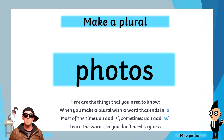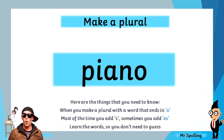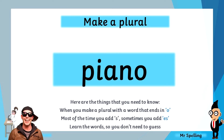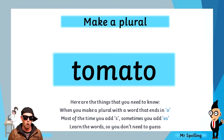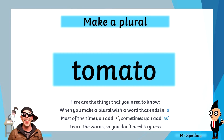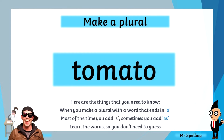Our next word is piano. To make a plural of piano, we need to know that it's a foreign word — it's actually an Italian word which means soft. So for foreign words, we add S, and the plural of piano is pianos. I'm feeling hungry because our next word is tomato. To make a plural of tomato, it's one of the words that's been in the English language for a long time. It's on the list of words that end in ES, so tomato becomes tomatoes.